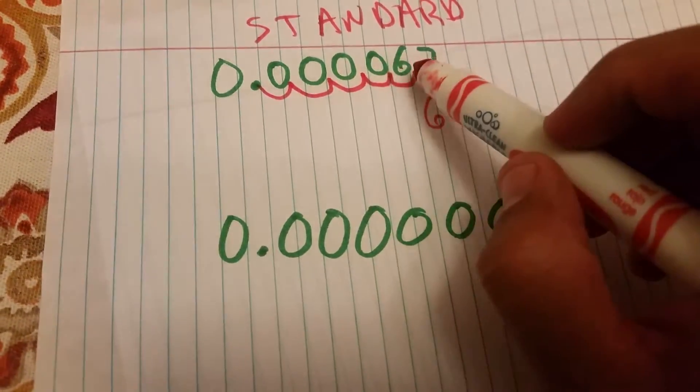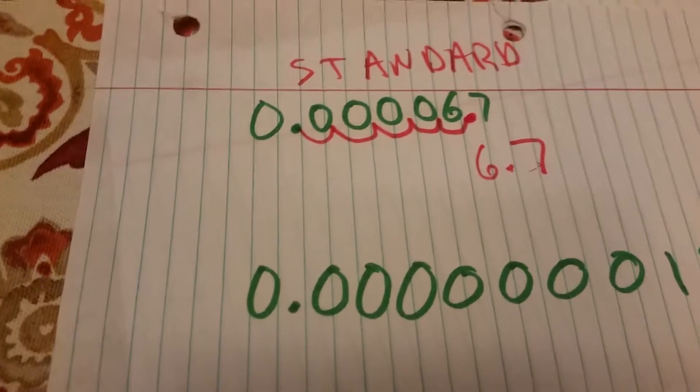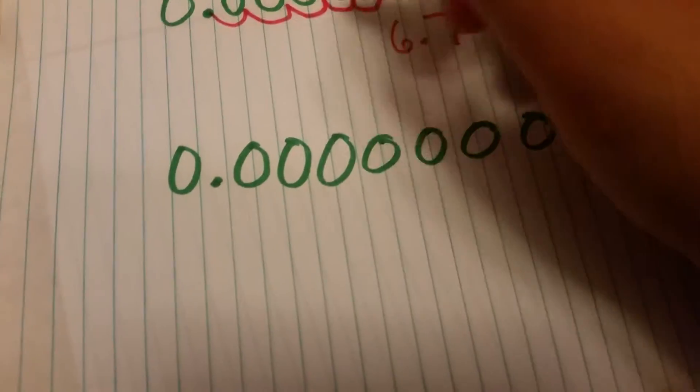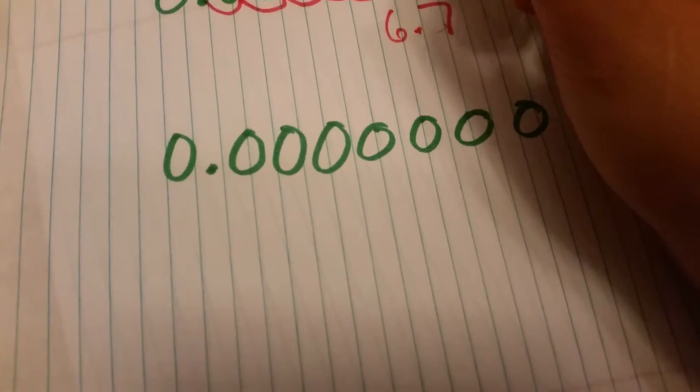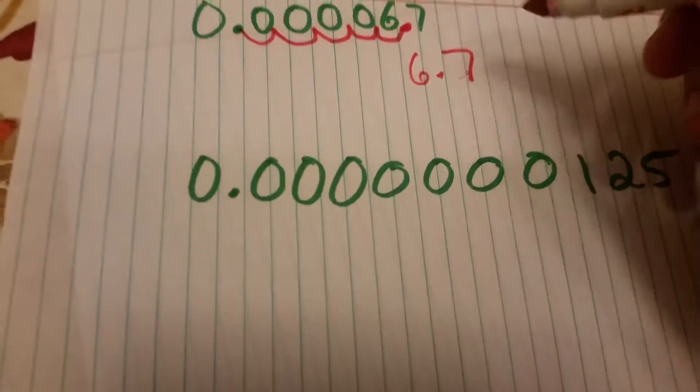Now as you can see, 6.7 is way bigger than 0.000067, right? So how do we even the odds? Because you just made this number into a bigger number, right? But we don't want that, we want to keep it the same.